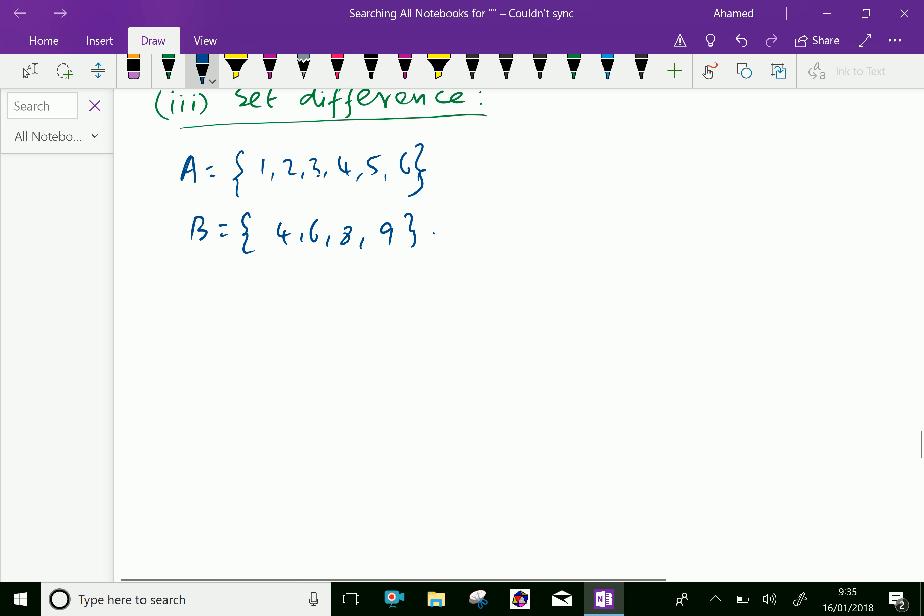Now, generally we can define A slash B. That is, A difference B, which is further equal. We can write A minus B, which is equal. Write A, which is not in B, means 1, 2, and 3, 5.